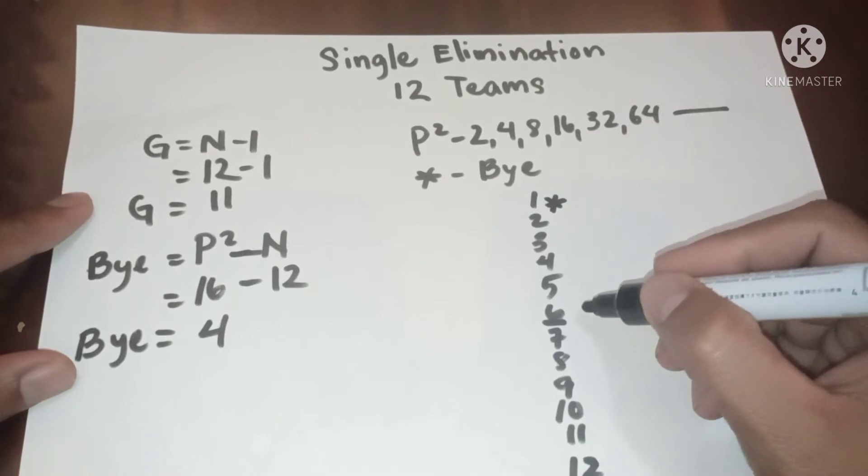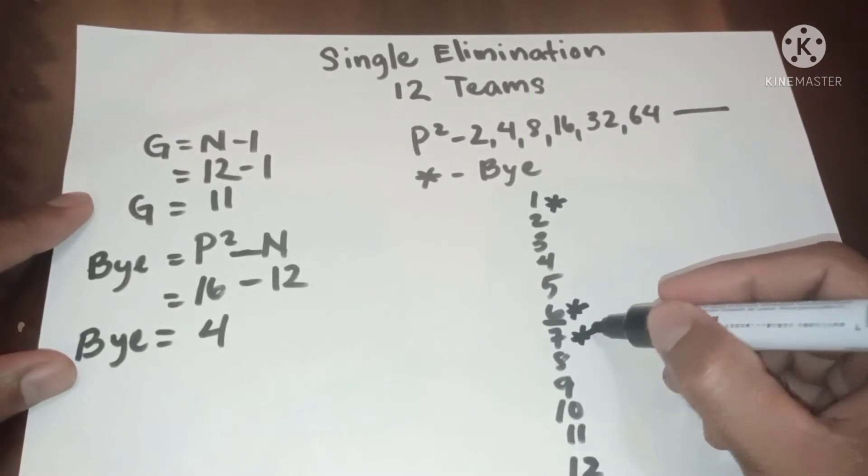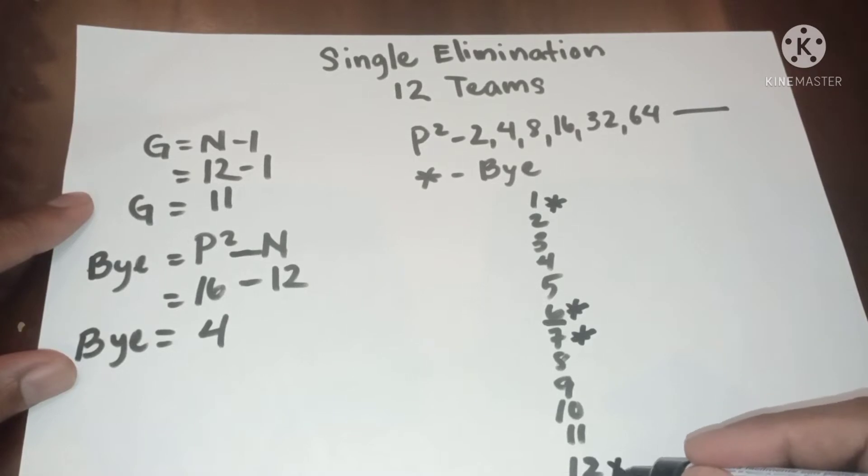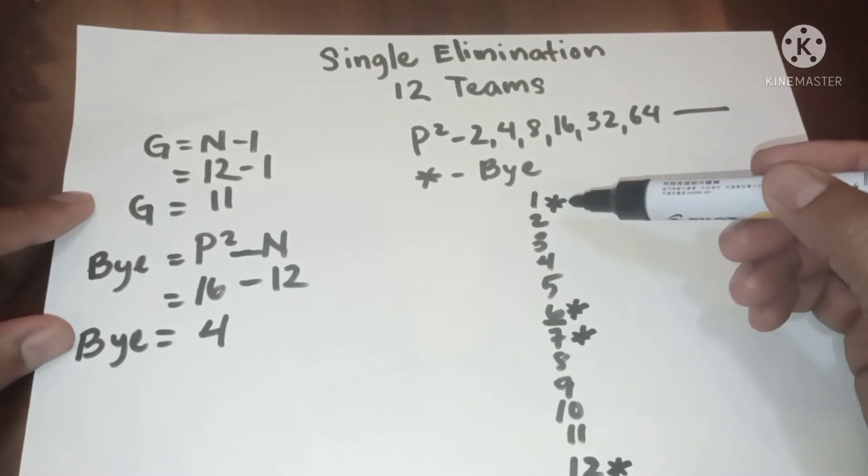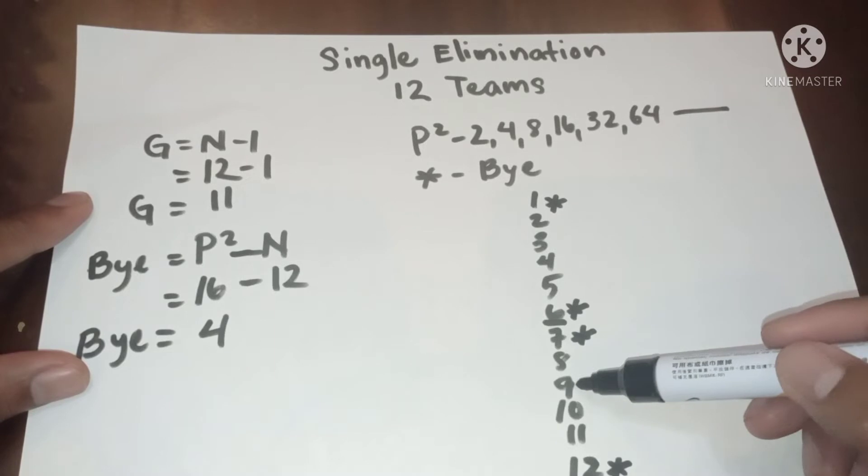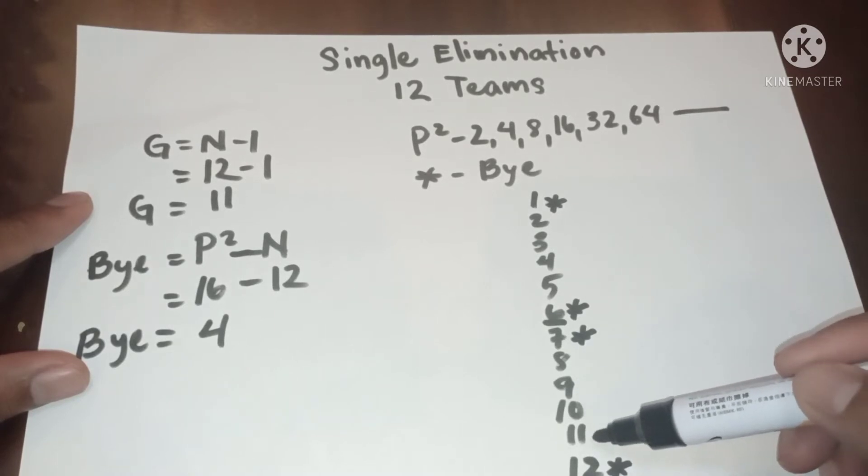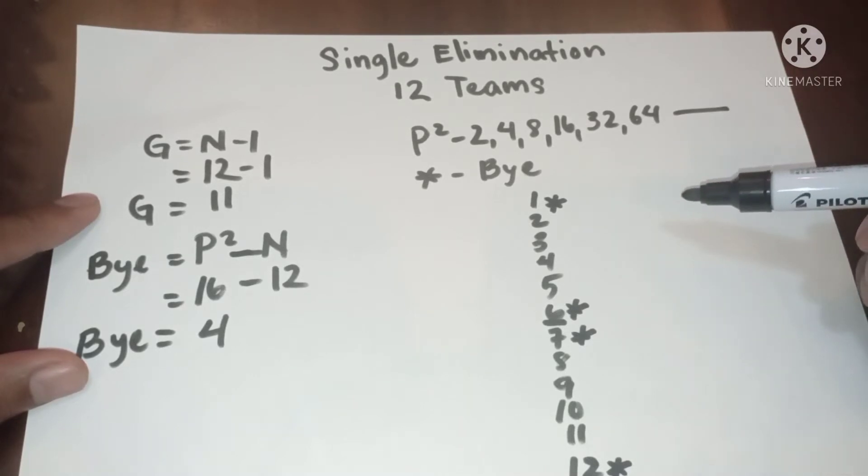In positions 1, 6, 7, and 12. Since we have four byes, meaning we have eight competing teams in the first round. Now let's proceed to diagram and game schedule.